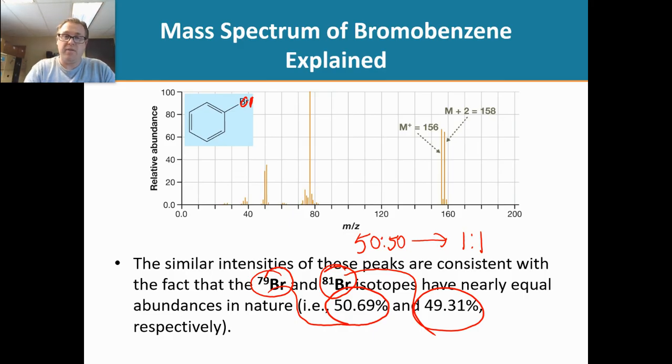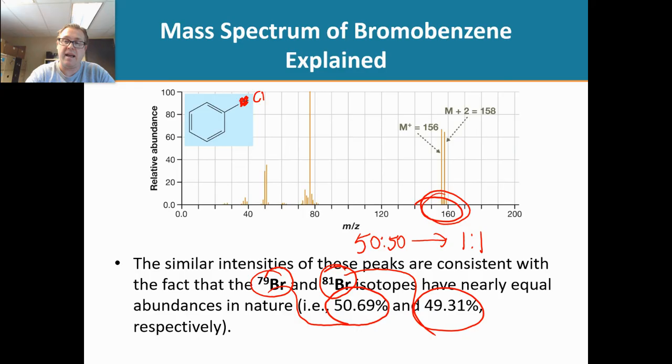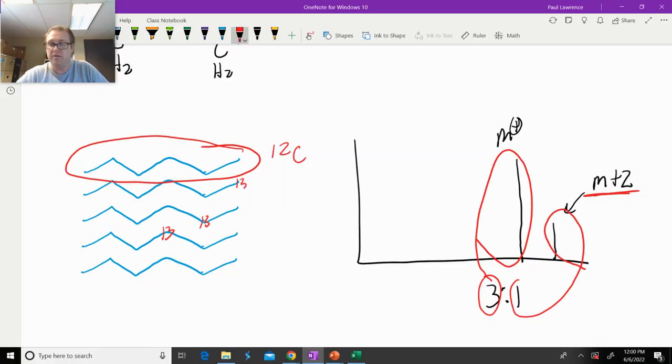So I do want to clarify that with this modified example where we replaced the bromine with the chlorine, the M over Z's would not be the same because look at the sizes there. Bromines are much larger, 79 atomic mass units versus 35. So I'm not saying that if we had chlorine, it would show up at that M over Z. I'm just saying you've got to notice that the ratios, it's going to look something like that.